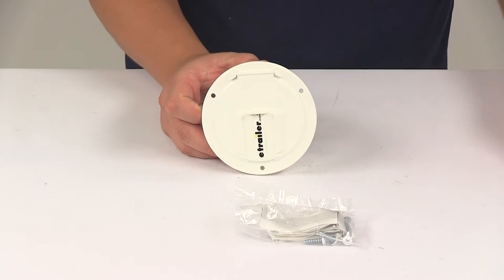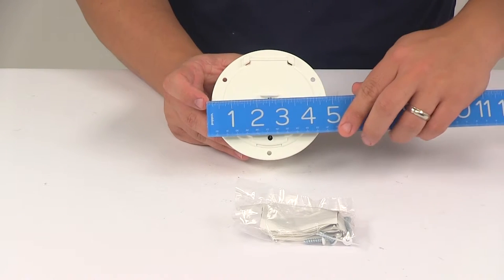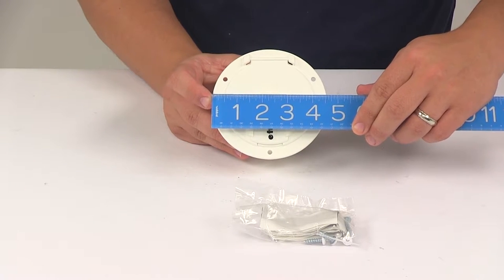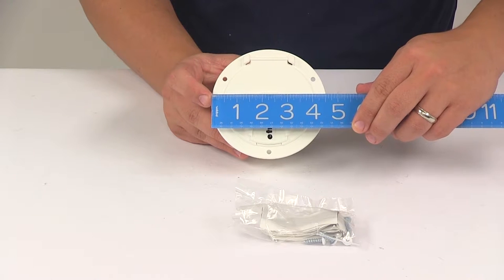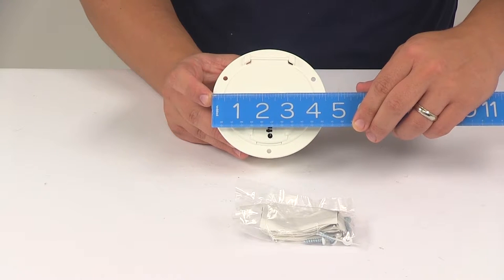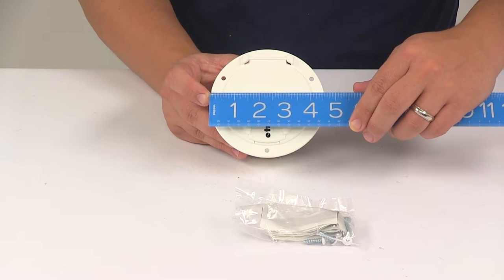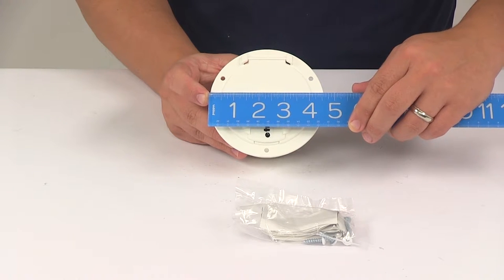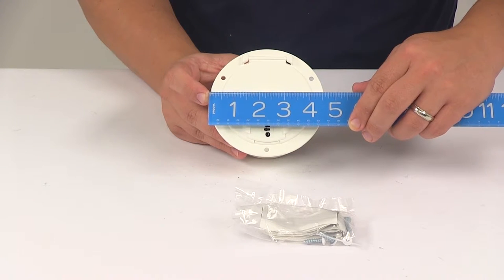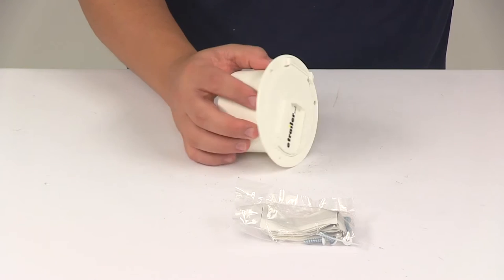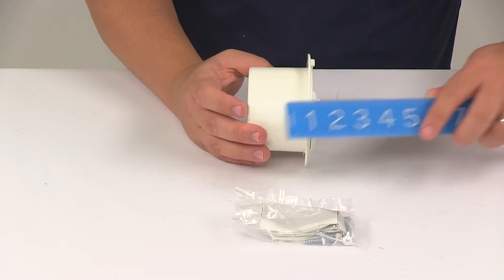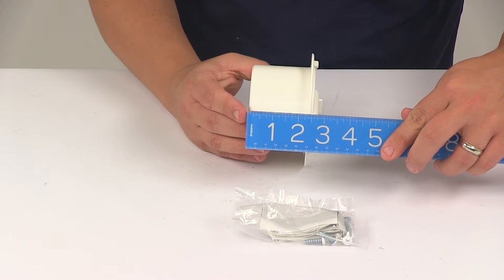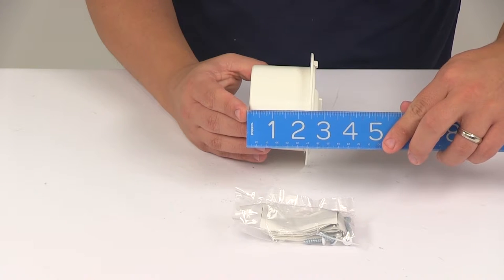Taking a look at the overall dimensions real quick, the overall diameter is going to give us a measurement of pretty close to four and a half inches, maybe four and nine-sixteenths, four and five-eighths, right in that area. The overall depth of the unit, very front to very back, is going to be about two and three-quarters of an inch deep.